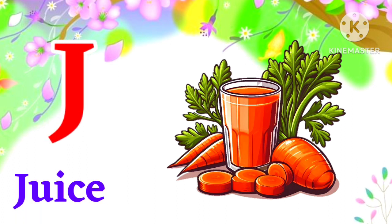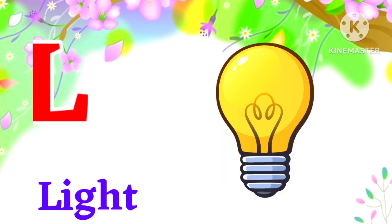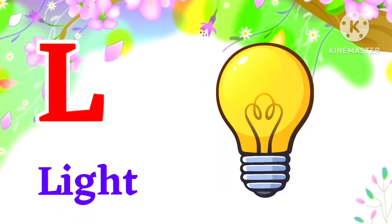J for juice. Juice means juice. K for kiwi. Kiwi means kiwi. L for light. Light means roshni.